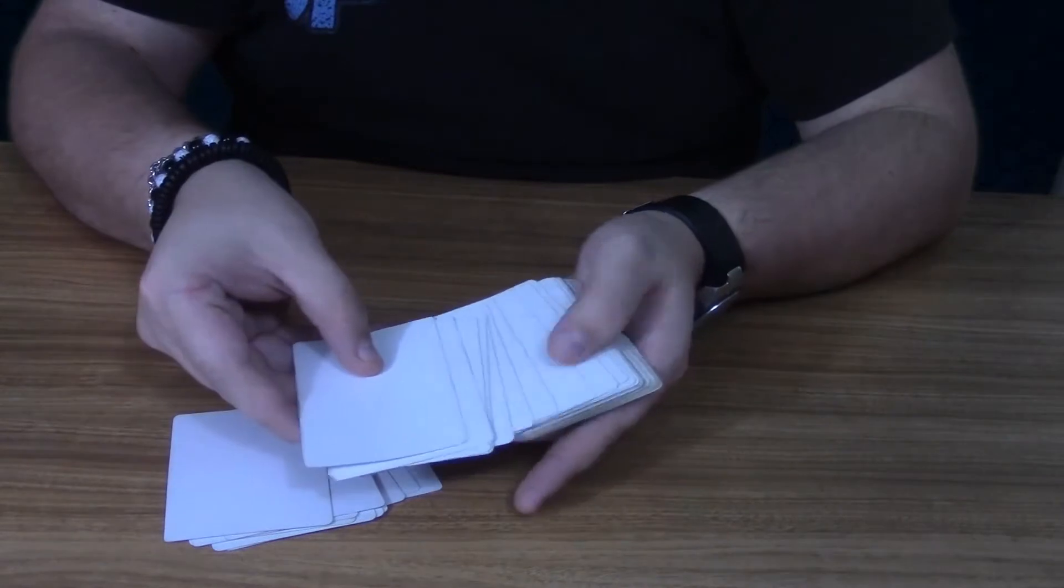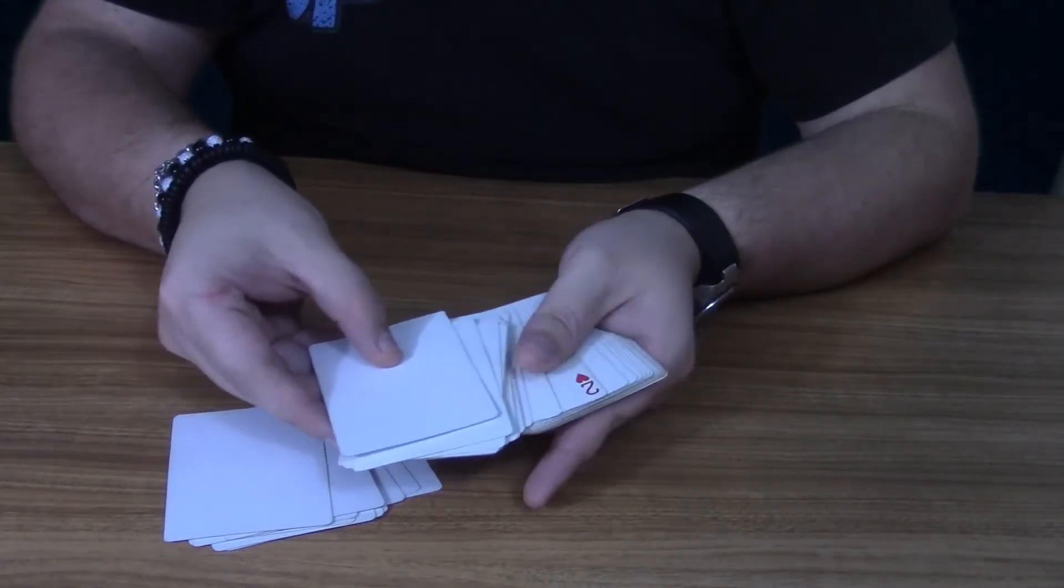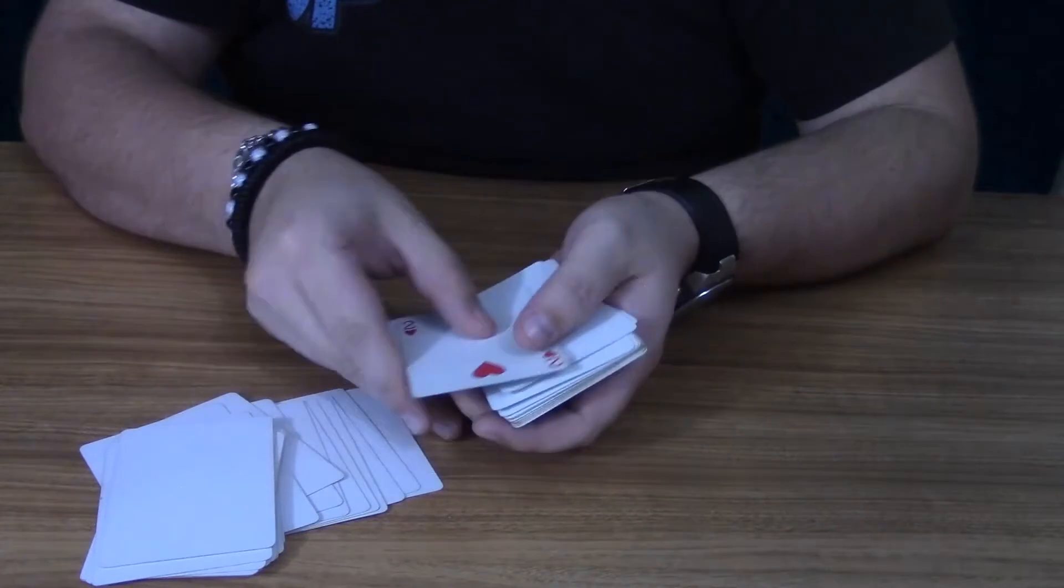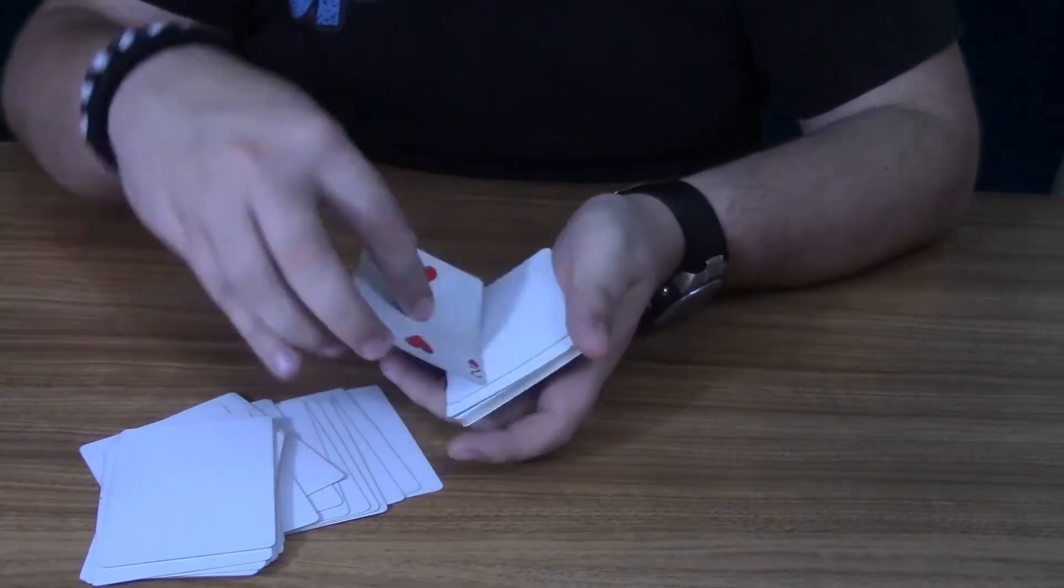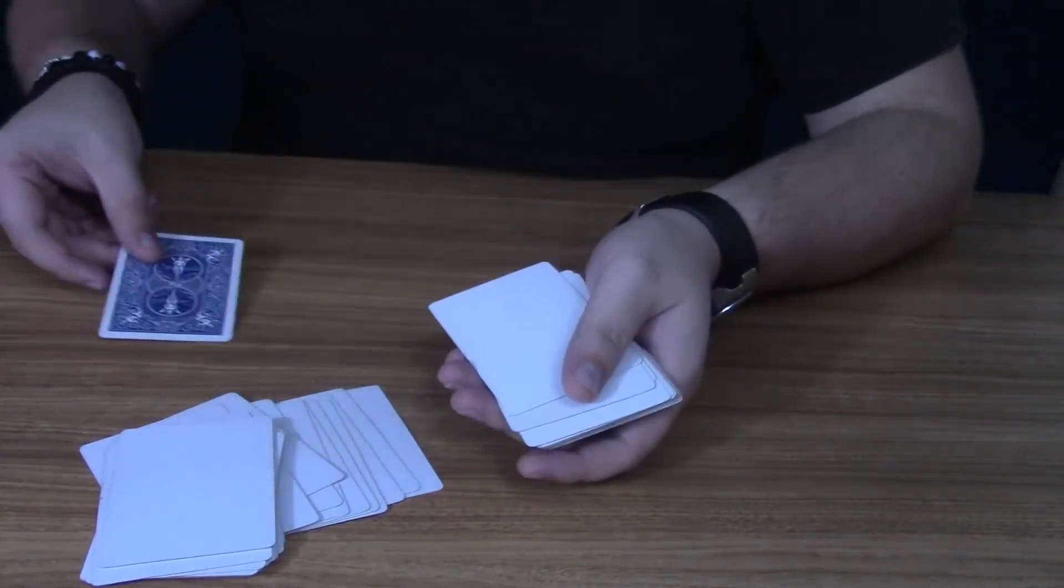But that's not the cool part. The cool part is the only card that doesn't fade out is your card, the two of hearts. And if I just take the two of hearts, flip it over,